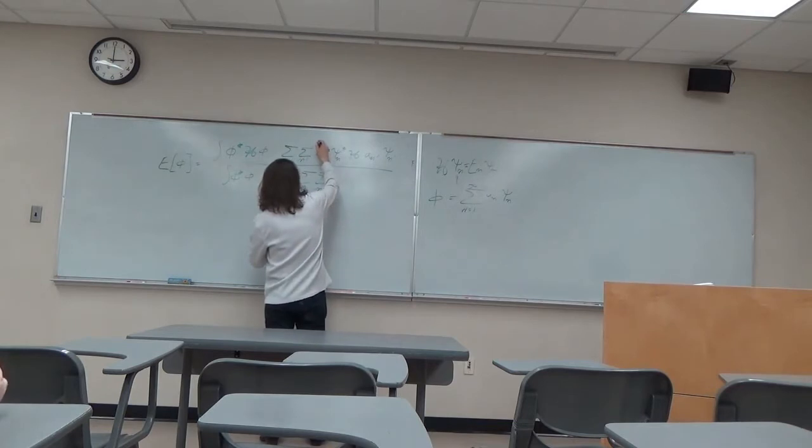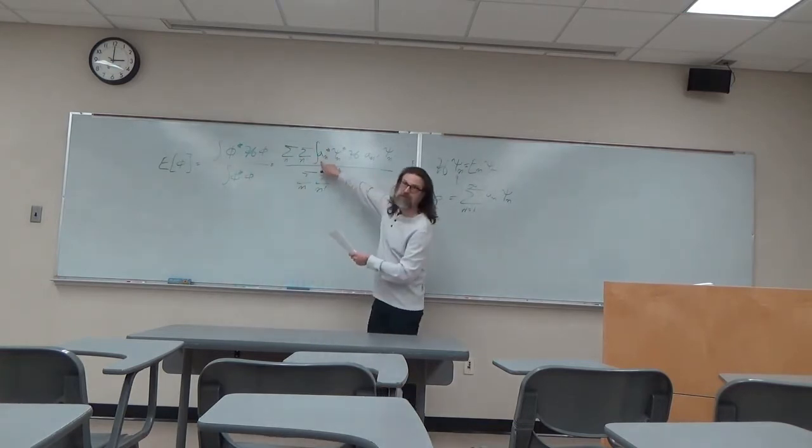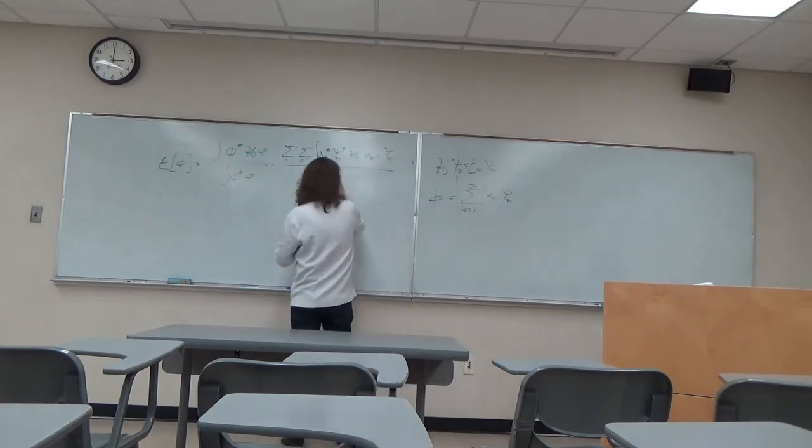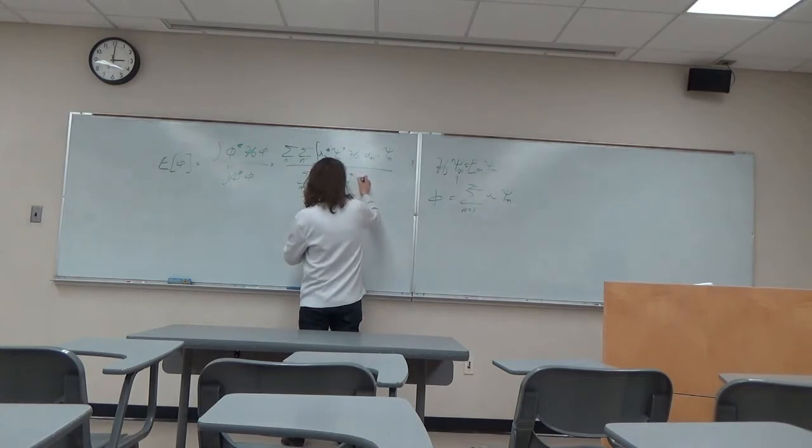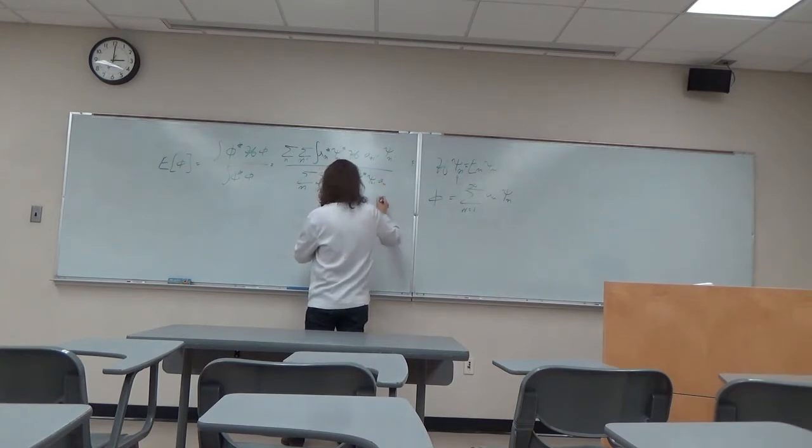divided by another double sum. Oops, sorry, there's an integral here too. Sorry, there's an integral on the side of a double sum. Integral a n star psi n star psi n prime a n prime.